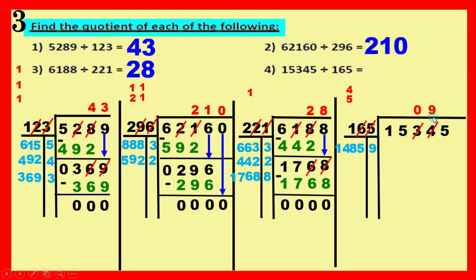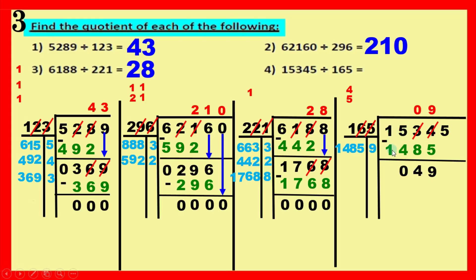Write nine above, its answer below, draw line and minus. Four minus five — can't do it, borrow one. Three becomes two; four becomes fourteen. Fourteen minus five equals nine. Two minus eight — can't do it, borrow one. Five becomes four; two becomes twelve. Twelve minus eight equals four. Four minus four equals zero. One minus one equals zero. After the minus, bring down — the next digit is five.